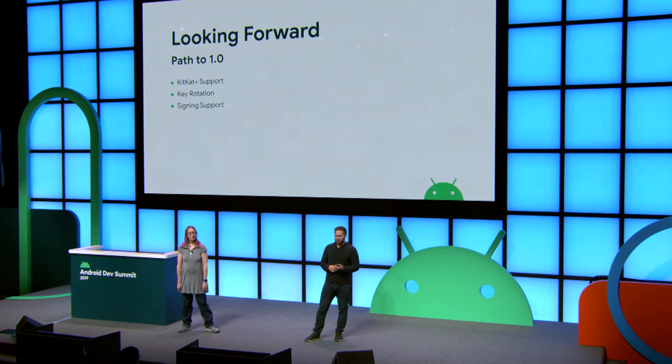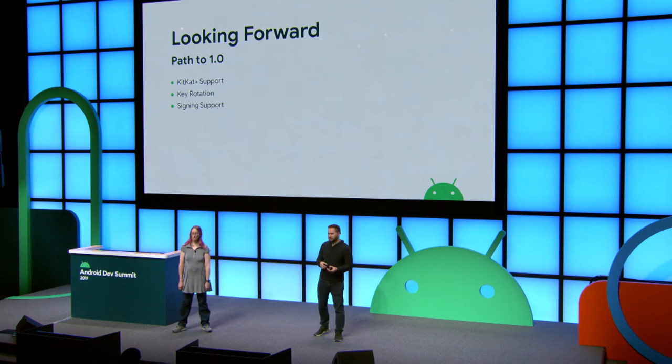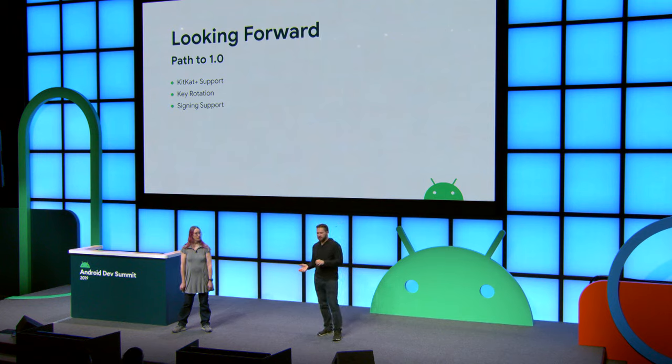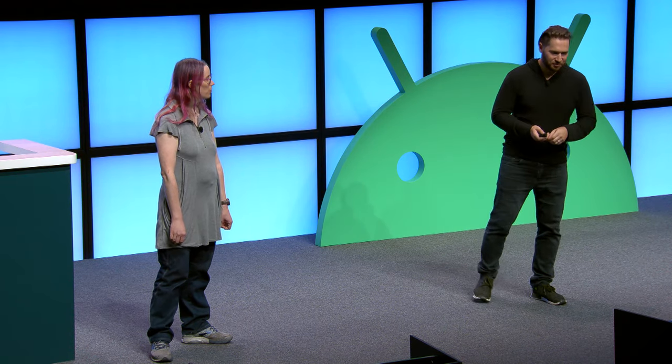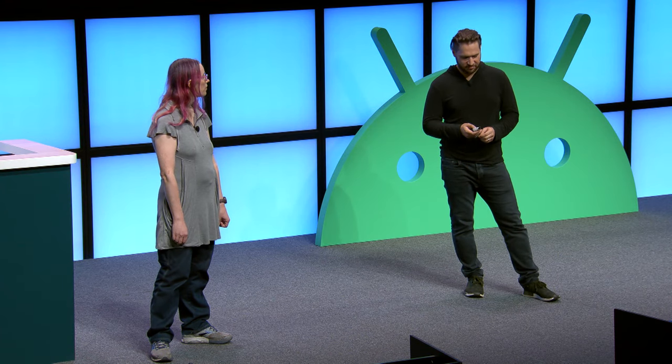Looking forward to 1.0 — it's coming. We're working with the Tink team to add KitKat Plus support. Currently Tink doesn't support RSA key pairs, and to support KitKat and Lollipop, the hardware-backed key store on Android doesn't support symmetric AES keys until Marshmallow — that's why it's taken a bit of time. We're also looking at key rotation as mentioned, and adding signing support. We're looking at a beta and a release hopefully this year. We appreciate the bugs and feature requests coming in and will keep working on it.